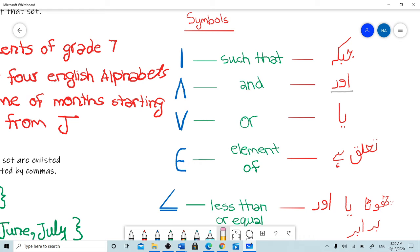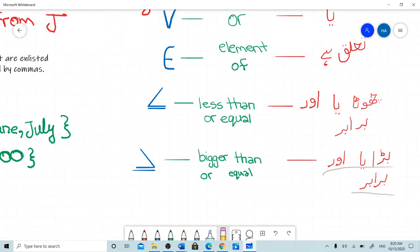This symbol ≤ means 'less than or equal' (chota ya barabar). This one ≥ means 'bigger than or equal' (bada ya barabar).